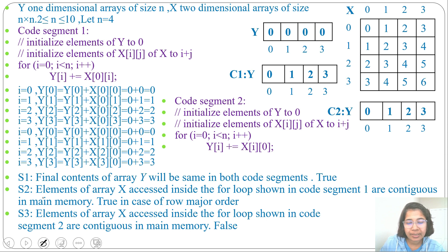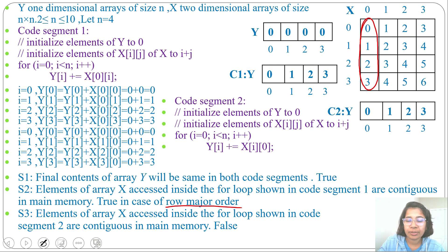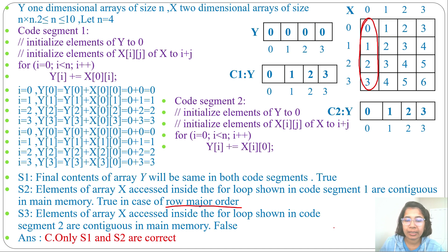Statement 3: elements of array X accessed inside the for loop in Code Segment 2 are contiguous in main memory. In Code Segment 2, we access X[0][0], X[1][0], X[2][0], X[3][0] — the first column. By default, storage is row-major order, so column-wise access is not contiguous. Therefore Statement 3 is FALSE. The answer is Statement 1 and Statement 2 (option C). Only S1 and S2 are correct; S3 is false.